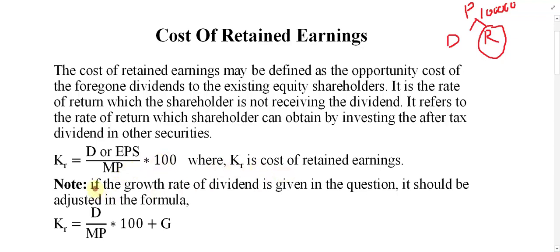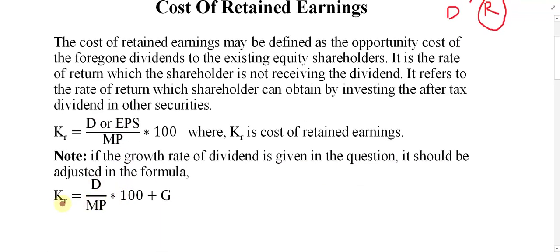If the growth rate of dividend is given in the question, it should be adjusted in the formula. Without growth the formula has no g, but if there is a growth rate, the formula becomes: Kr = (D or EPS) ÷ MP × 100 + g.